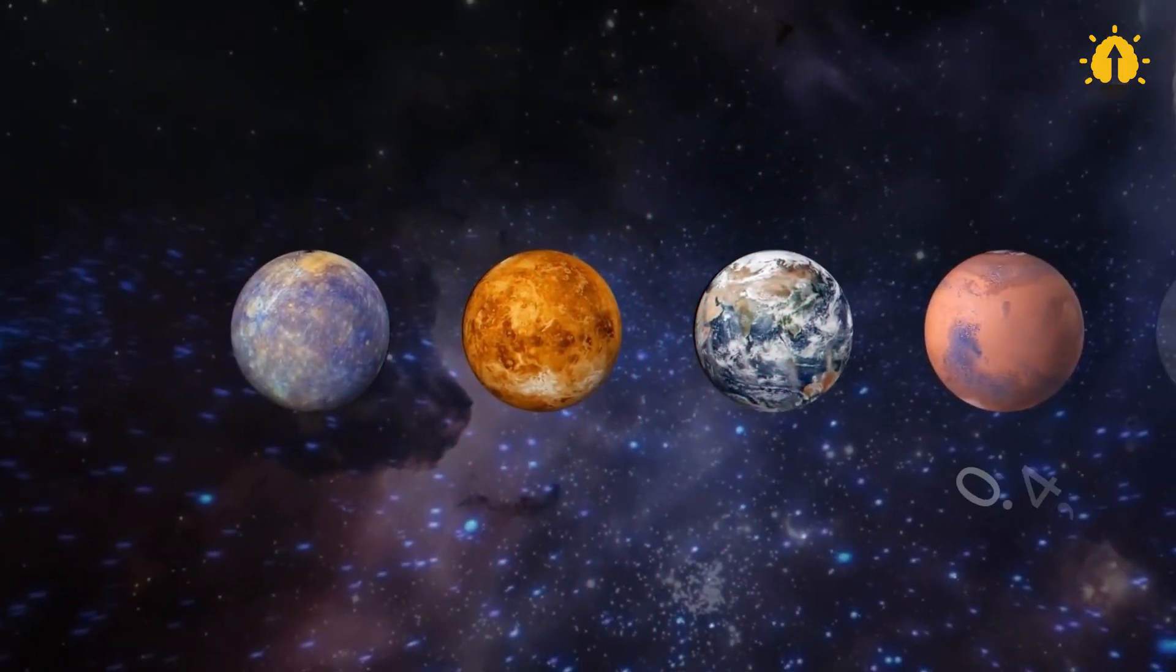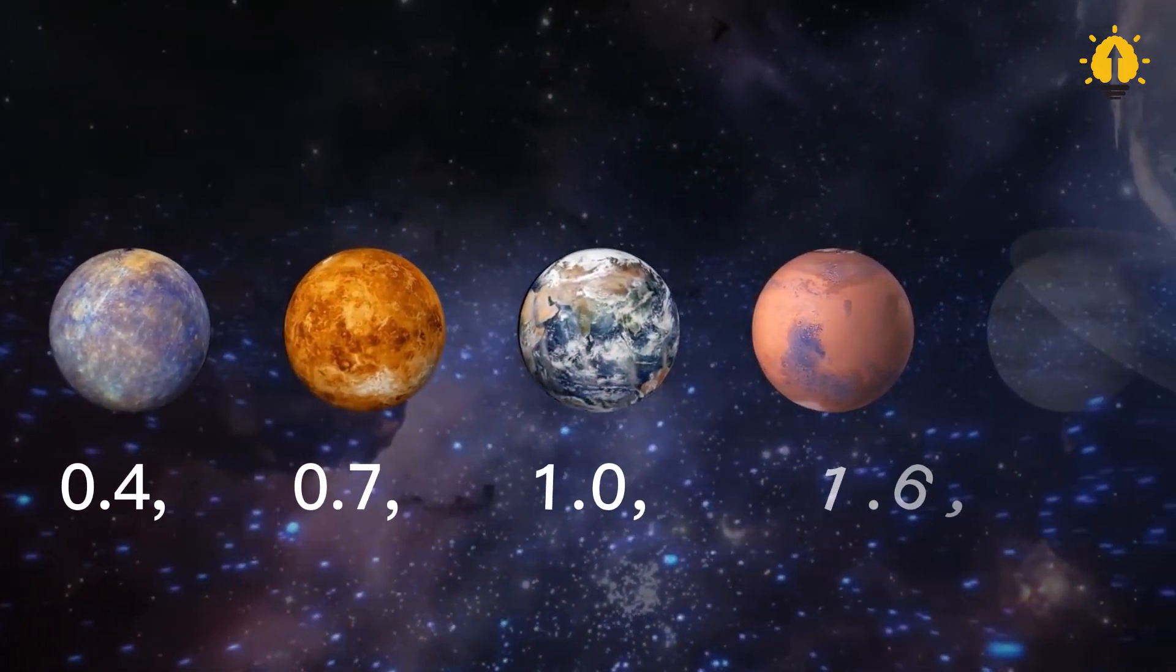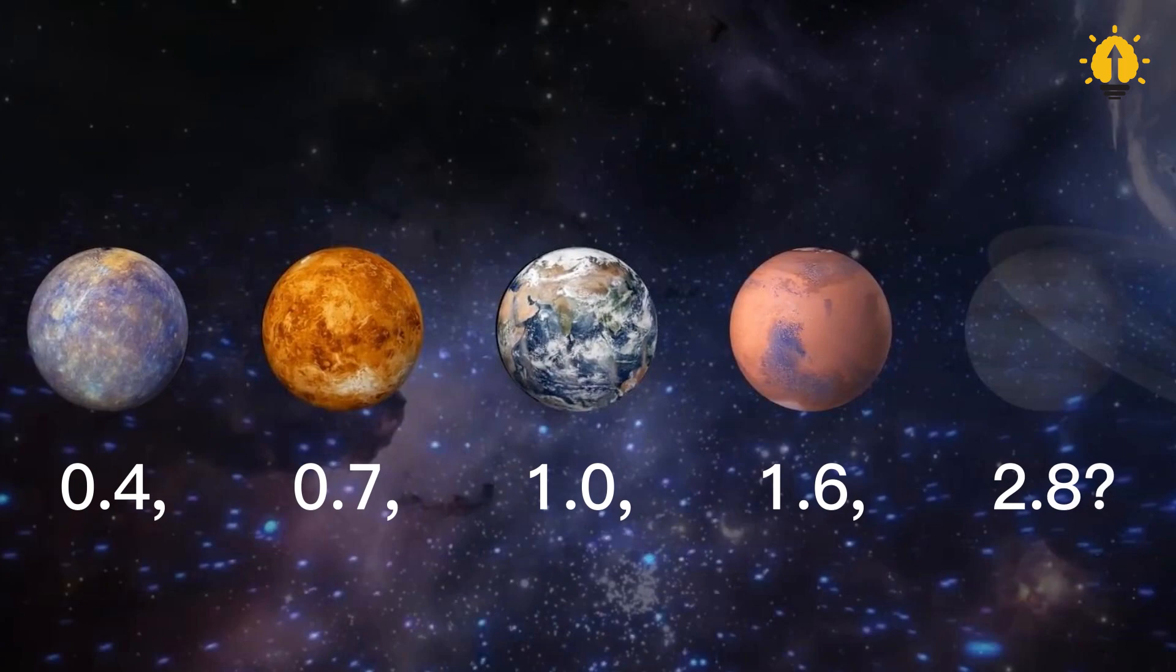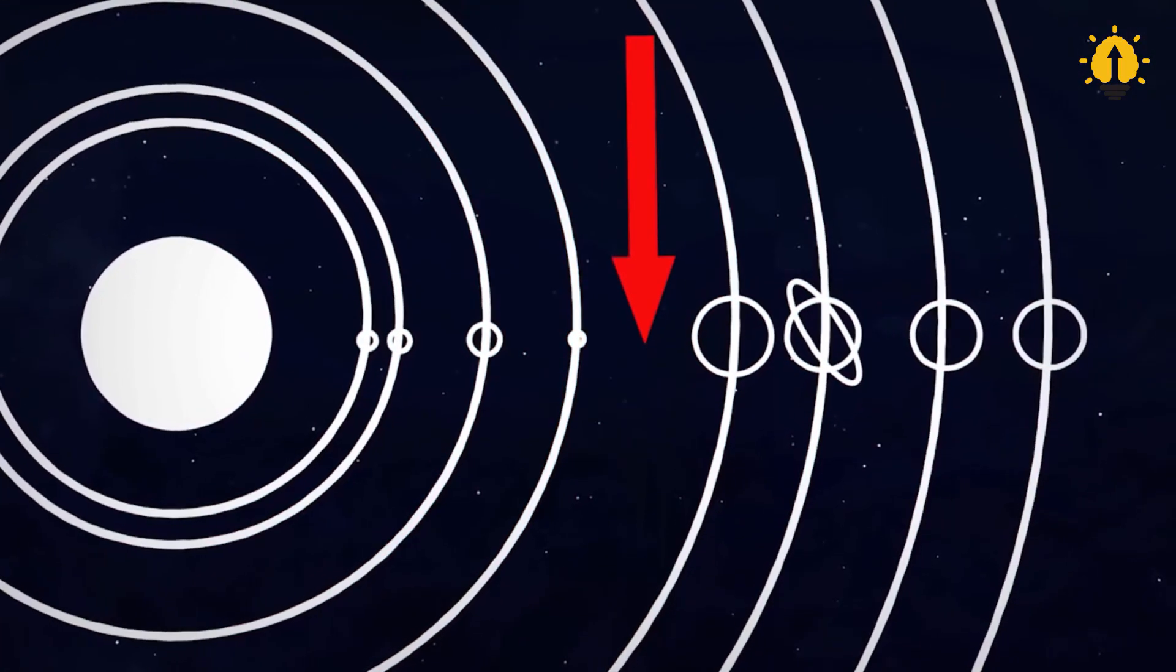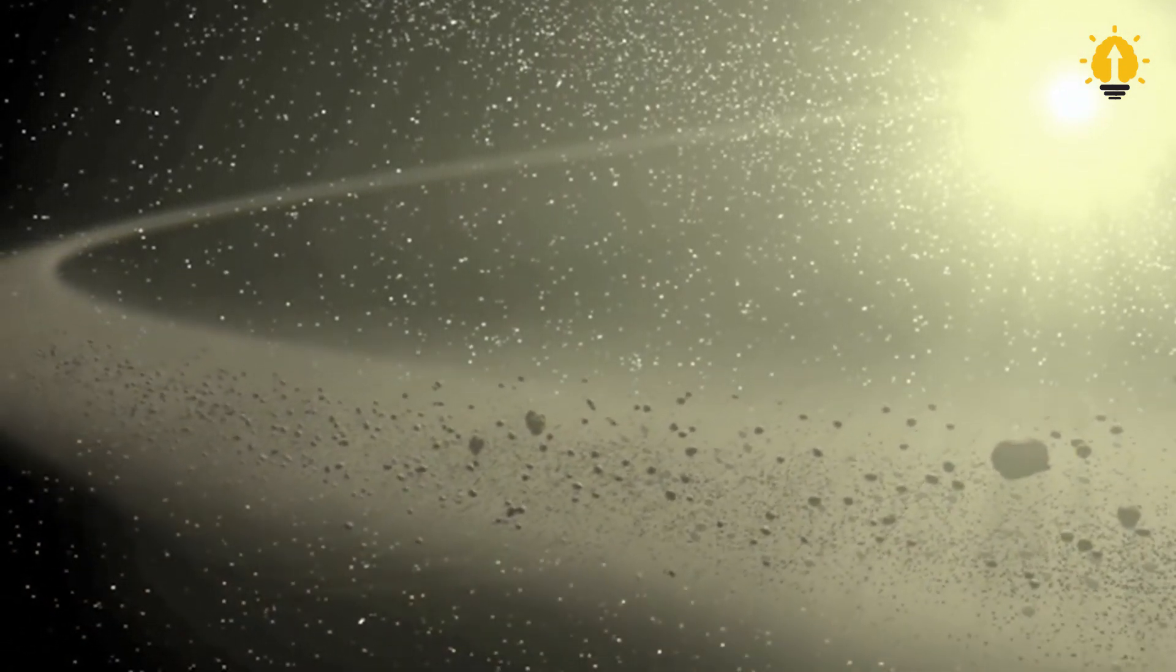By applying the formula, we can determine the distances of each planet from the sun in order from the closest to the furthest. We have Mercury, Venus, Earth, Mars, and then a lost planet. As we move further away from Mars, we encounter a gap where a planet should have been, according to the formula.